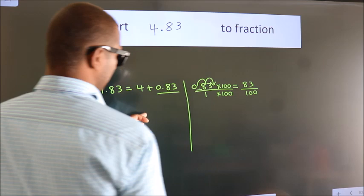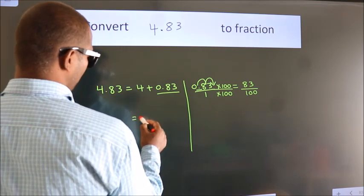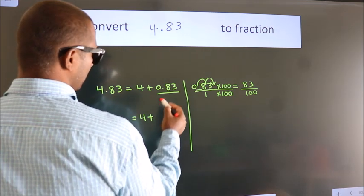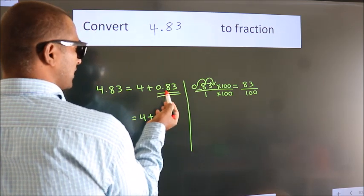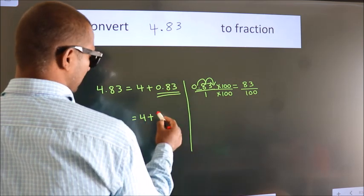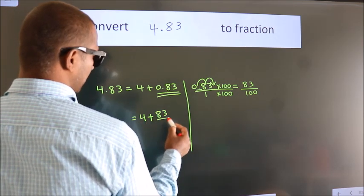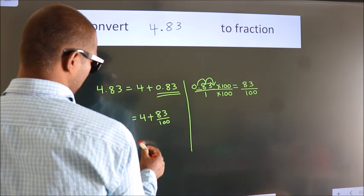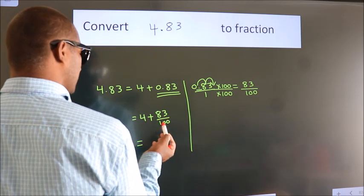Now here, 4 plus, in place of 0.83, now we write this fraction 83 by 100. 4 plus 83 by 100.